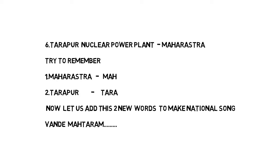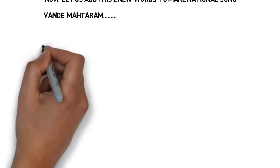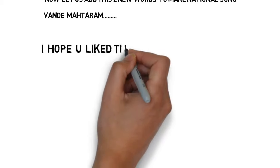Now using these two keywords — TARA and MAH — we connect them to our national song Vande Mataram. In 'Vande Mataram,' the second word is 'Mataram,' and the first three letters M-A-H stand for Maharashtra. 'TARA' means Tarapur Nuclear Power Plant. If you remember Vande Mataram, you can easily recall that Tarapur Nuclear Power Plant is in Maharashtra.